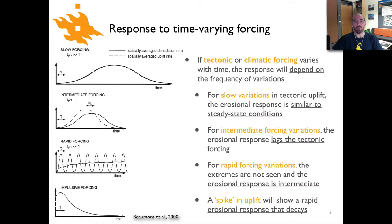Now we'll look at some more examples of how these systems behave. In what we're going to look at here, we'll see a combination of a line on these plots that will represent the average uplift rate and a line that represents the average denudation or erosion rate. We have on the vertical axis the uplift or denudation rate and on the horizontal axis is time.